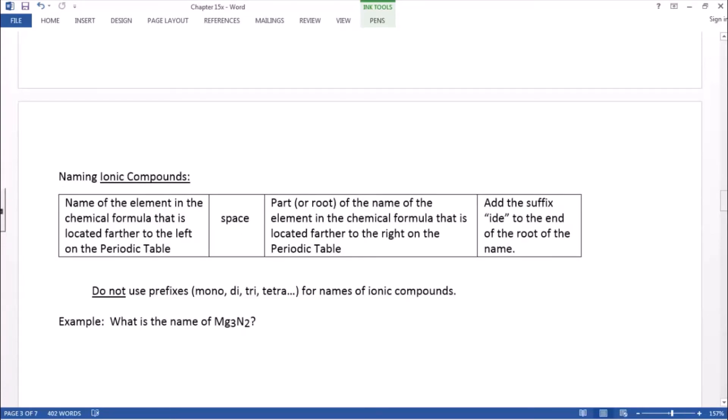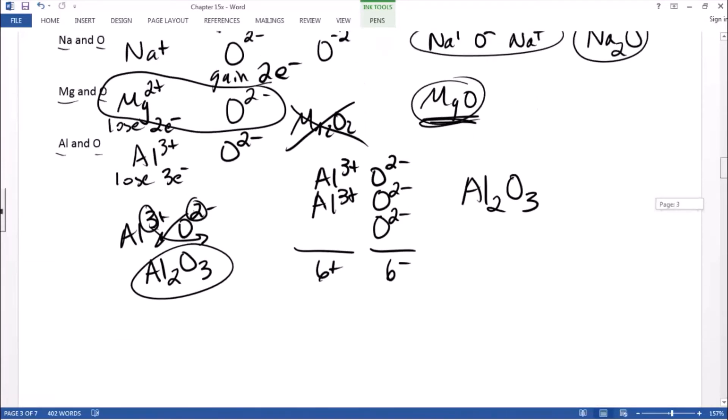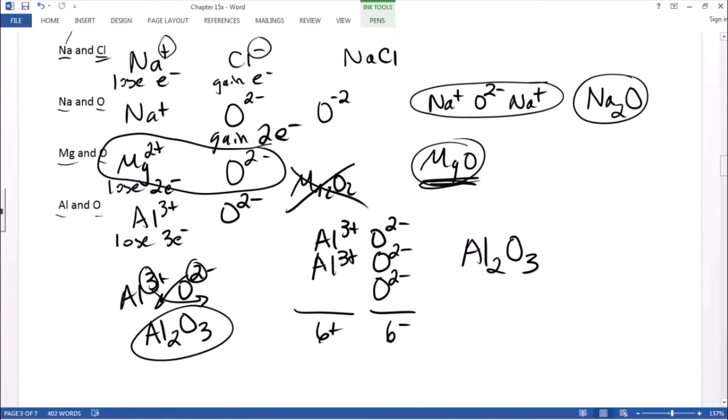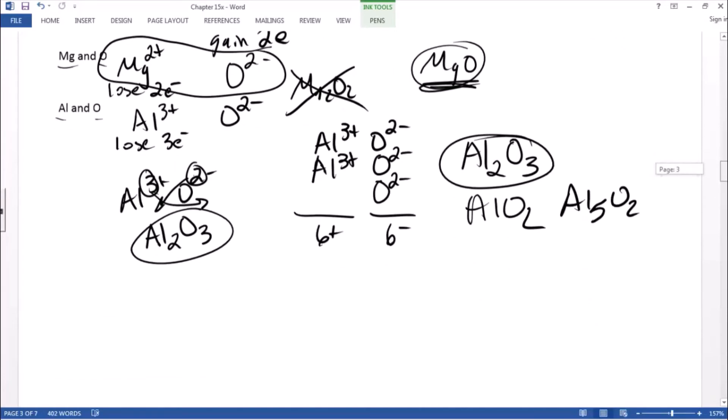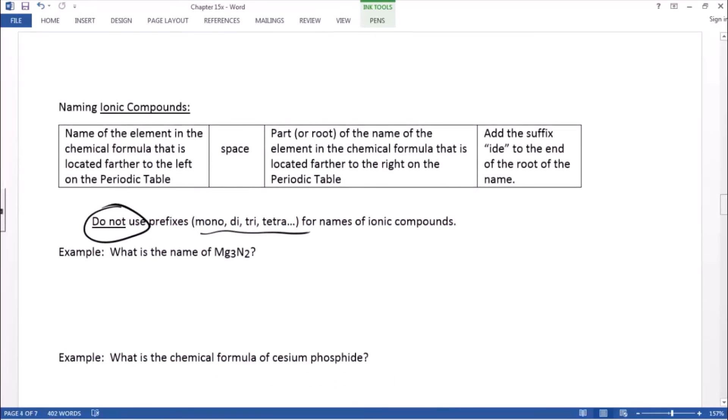Okay. A couple of remarks about ionic compounds. When we name them, we don't use the prefixes. Mono, di, tri, tetra. Because there's only one combination that'll cancel out the charge. There are no compounds of aluminum O2 or aluminum 5O2, whatever. The only combination that cancels charge is two aluminums, three oxygens. So you don't have to use the prefixes. There's only one compound with aluminum oxide. So just call it that. Aluminum oxide.